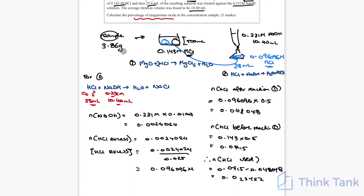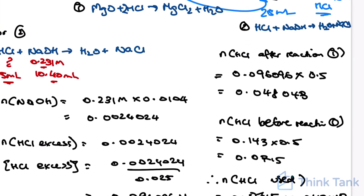To recap: we dissolved the sample into 500 mL of HCl. The magnesium oxide reacted with some HCl, leaving excess HCl. We titrated the excess against sodium hydroxide, which told us the concentration of the remaining HCl. Knowing HCl concentration before and after the reaction, we subtracted to find how much HCl was consumed by the magnesium oxide.